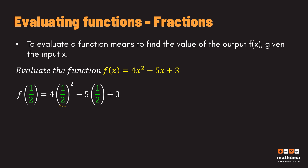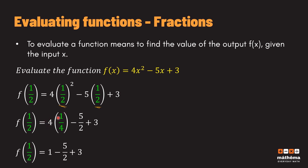So x is substituted with one half throughout: we have 4 times (1/2)² minus 5 times (1/2). Applying the law of exponents, we distribute the two — one squared is just one, and two squared is just four — so we have 4 times (1/4) minus 5 times (1/2), which gives us 4 over 4, minus five over two, plus three.